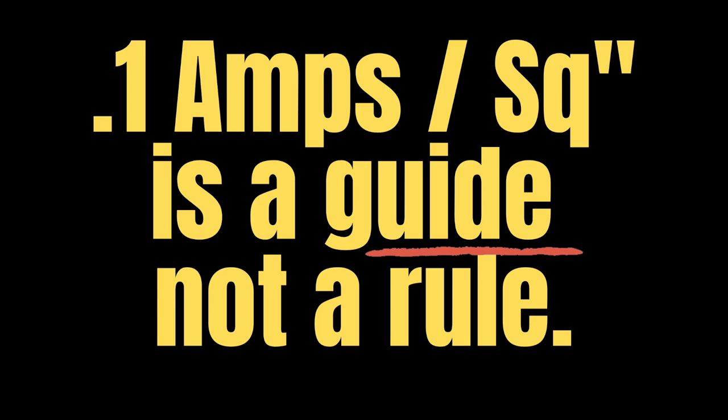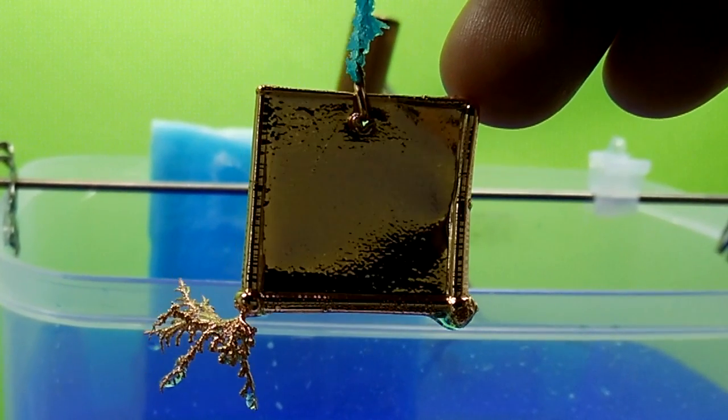0.1 amps per square inch is a guide, not a rule. Hello, Electro Jeweler Jordan here, and today we're going to be conducting a current settings test.